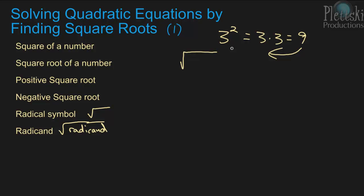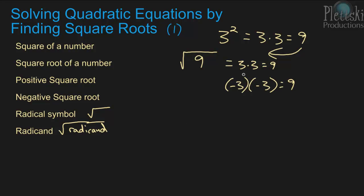Back to this problem: if you want to find the square root of 9, that means you want to find the number that times itself equals 9. Well, 3 times 3 equals 9, but also negative 3 times negative 3 equals 9. So both 3 and negative 3 are square roots of 9.